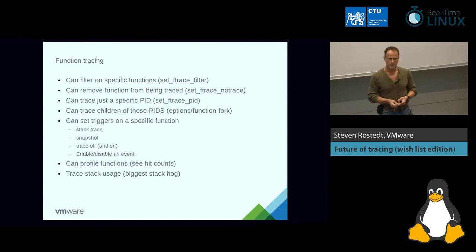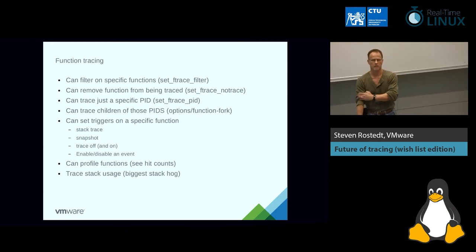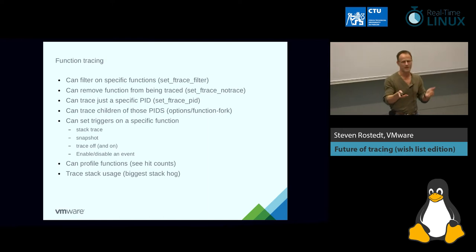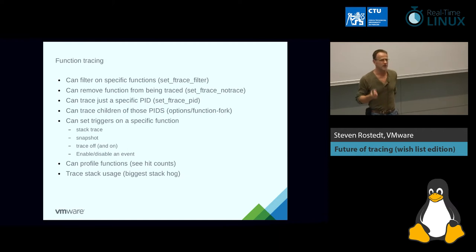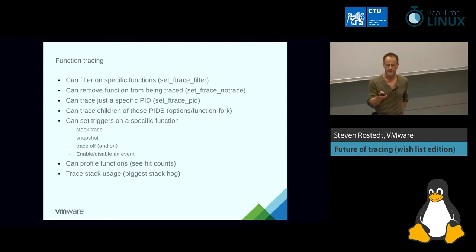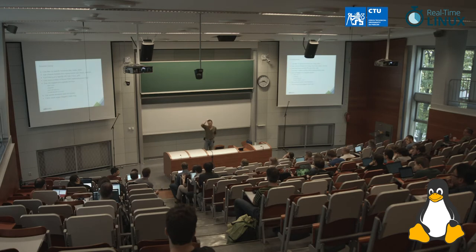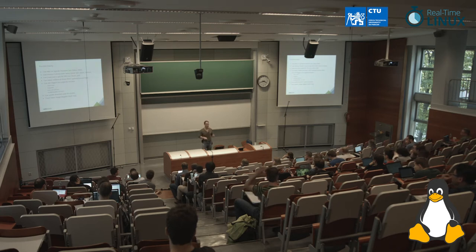There's also trace-off on warning: there's a flag you can set so if you actually hit a kernel warning, tracing turns off. I think it's in the proc filesystem or the tracing directory - I forever forget. I need to put everything into the tracing directory, that's on my to-do list. So if you're tracing and hit a warning, tracing stops so you don't lose the data you're looking for. You can also enable and disable events by hitting a function - people have asked about that. And there's a profiler if you just want to see how many times a function gets hit, though perf can do that as well.